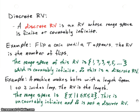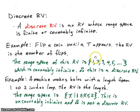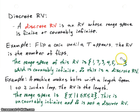Let's look at another example. We're going to flip a coin until a tails appears, and the random variable will be the number of flips. We'll flip at least once, so the first possible value is 1, and we could keep going forever — it's possible, however unlikely, to get an infinite number of heads. We can count these: 1, 2, 3, 4, 5, and so on. Therefore, it's countably infinite, and this is a discrete random variable.